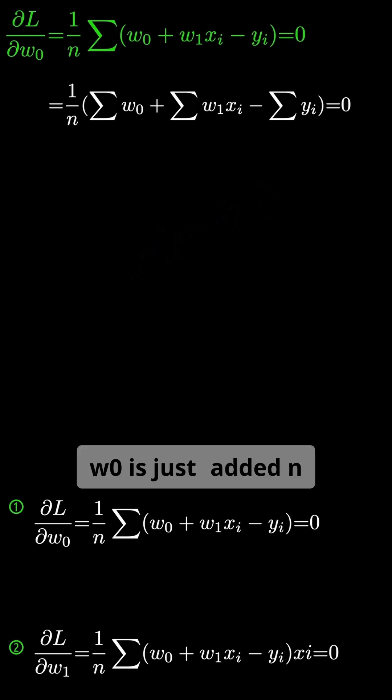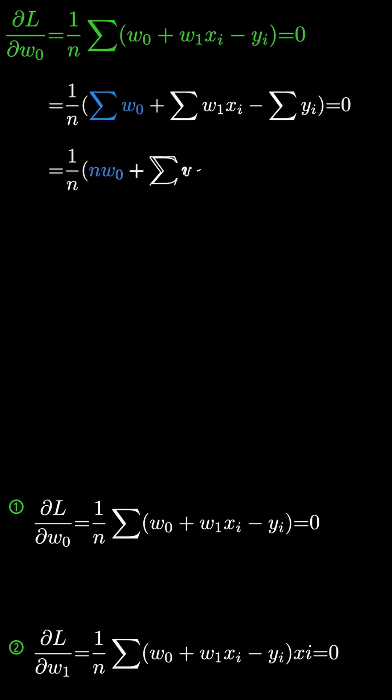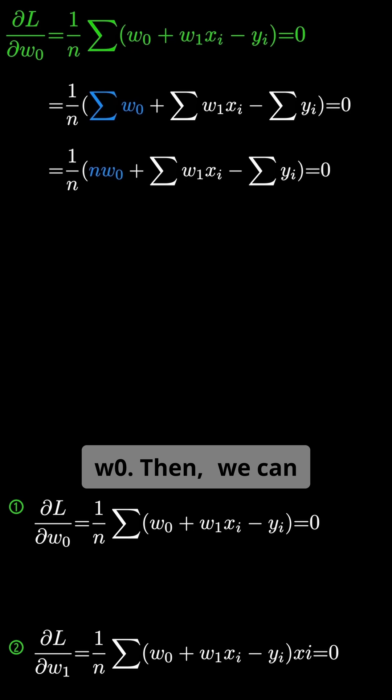w0 is just added n times, giving n times w0. Then, we can multiply each term by 1 over n, which you're familiar with. For w1, xi is a common factor, so we can factor it out.